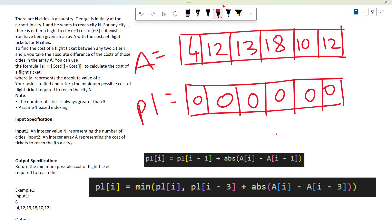They're giving us one array A containing prices of all the cities. The formula is: cost = A[i] - A[j]. To calculate the cost of a flight ticket, we need to use this formula to get the price between any two cities.